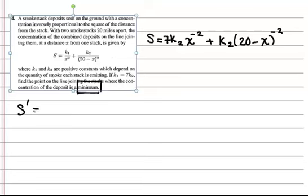Therefore, we need to be able to take the derivative of s. So I first made a substitution that k1 is equal to 7k2, and then now I'm going to go ahead and take the derivative. Now s is a function of the variable x, and k is a constant coefficient. So all I have to do is worry about the derivatives of the x's.